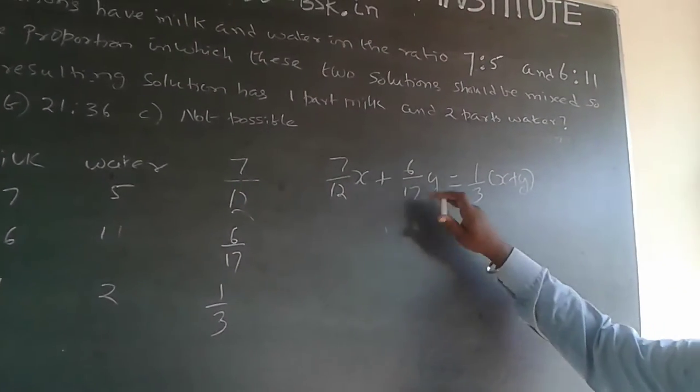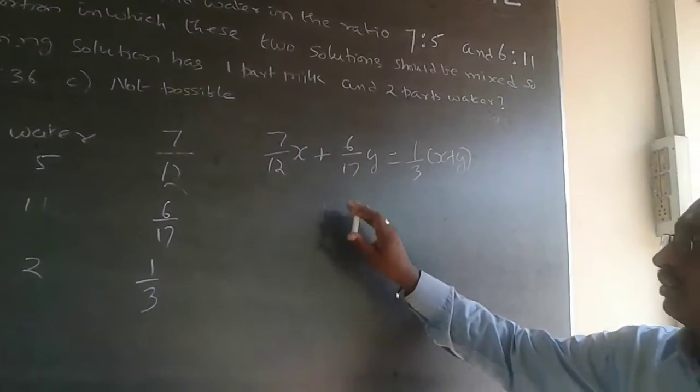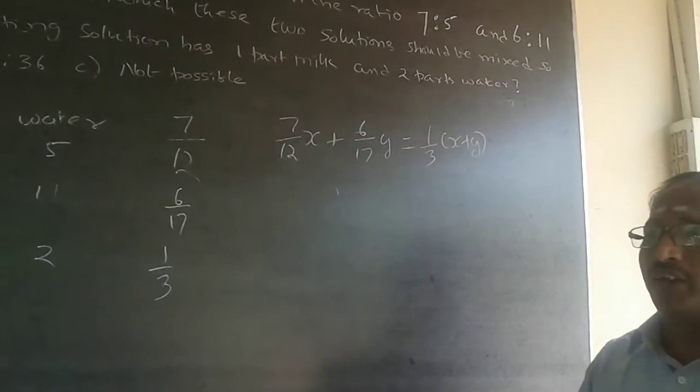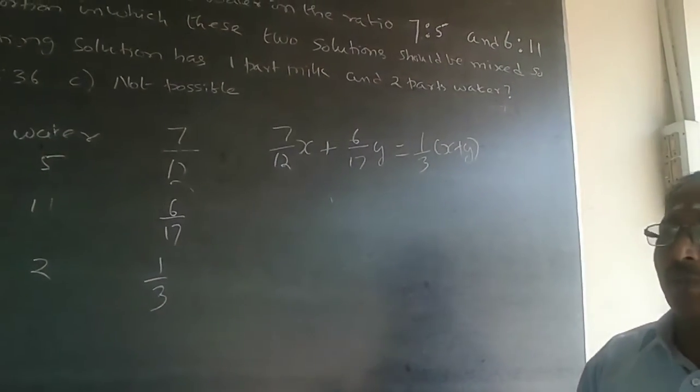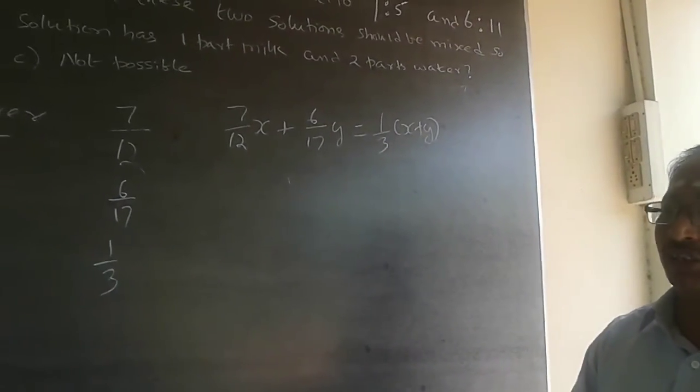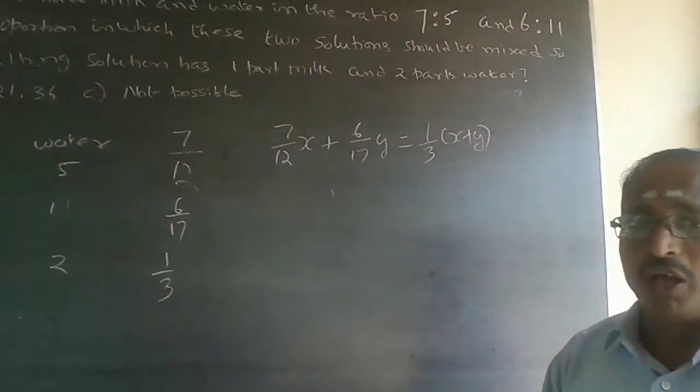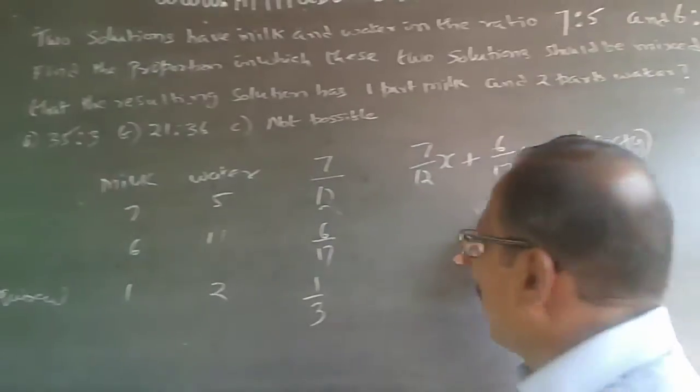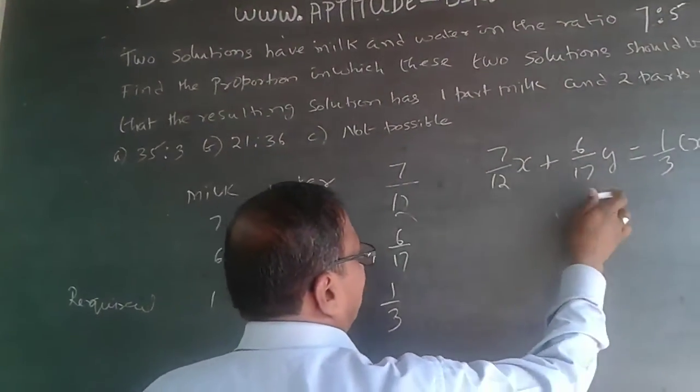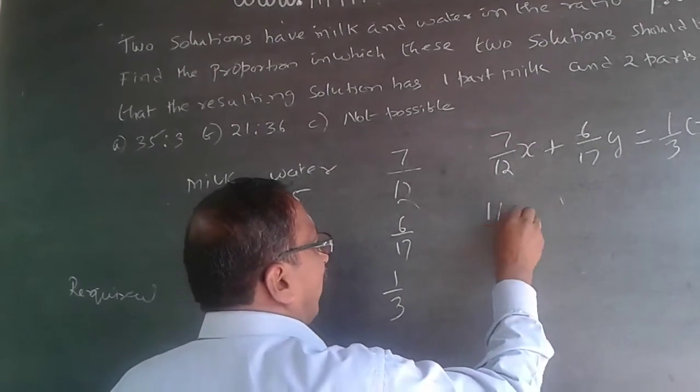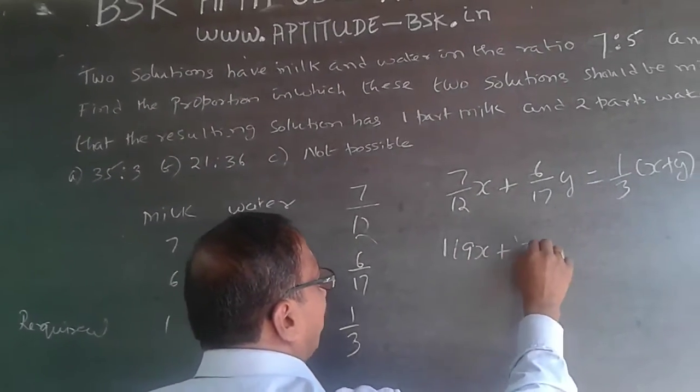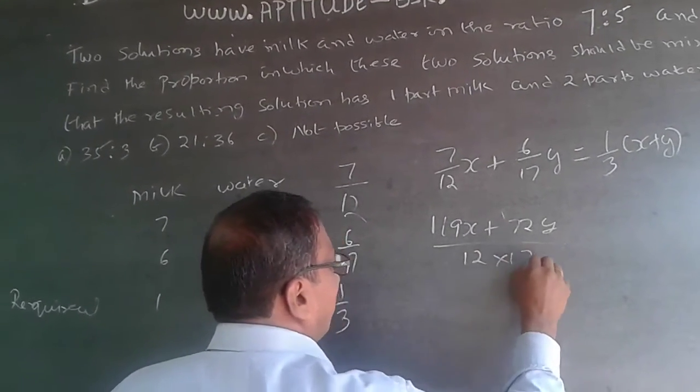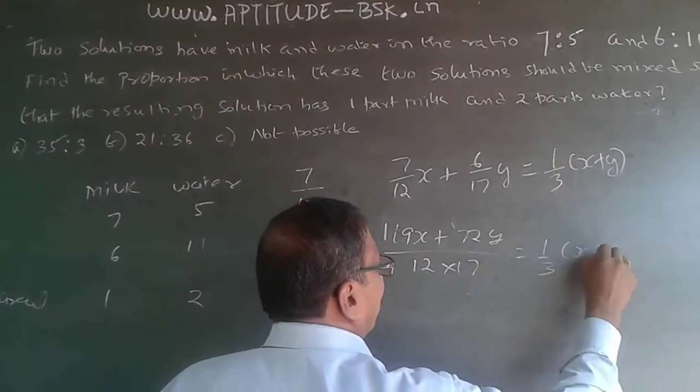Now when I solve this, what I want is the ratio x by y. When I solve this, if ratio between x and y is positive, I will have to mix it that way. But in case I get a negative value, it is not possible for me to mix. So when I solve this, LCM is 17 into 12. So 119x plus 72y divided by 12 into 17 will be equal to 1 by 3 of x plus y.